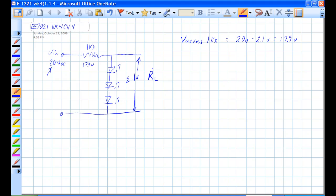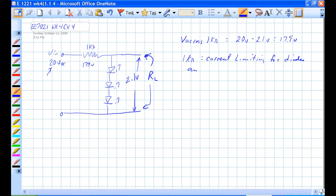We put our RL out here, and we have the 1K ohm current limiting for the diodes and the circuit.